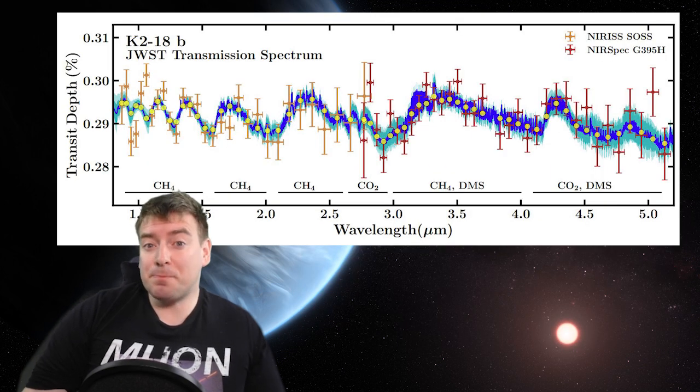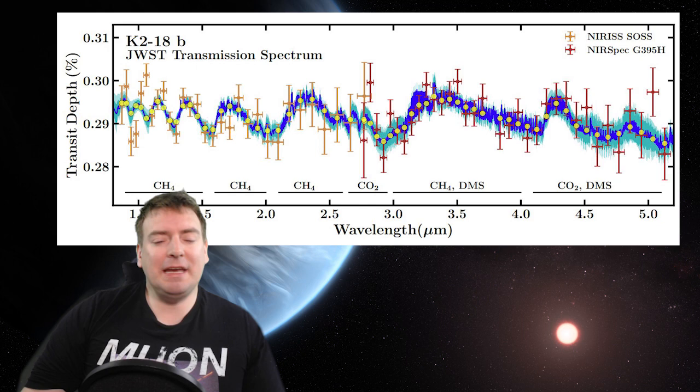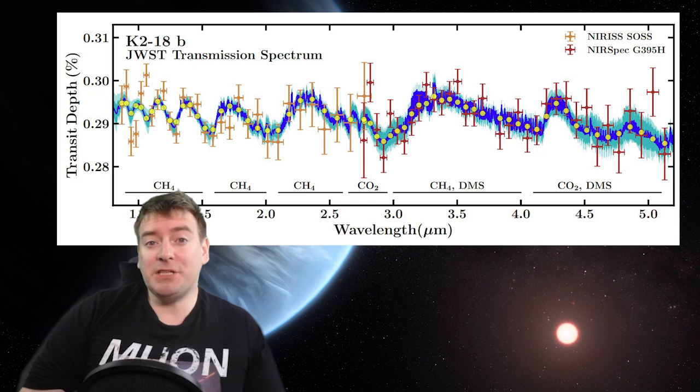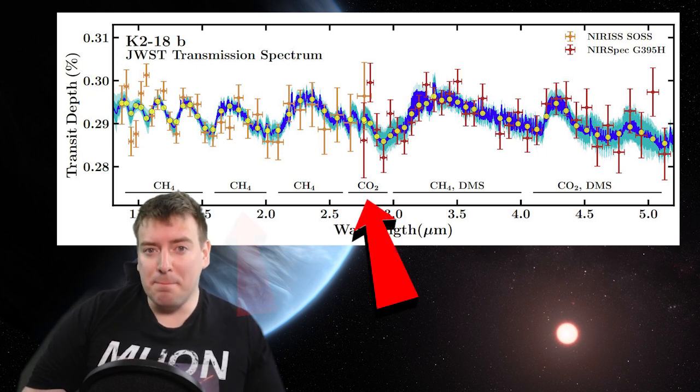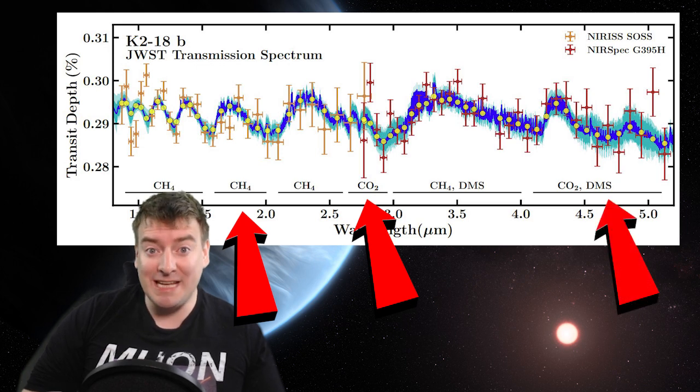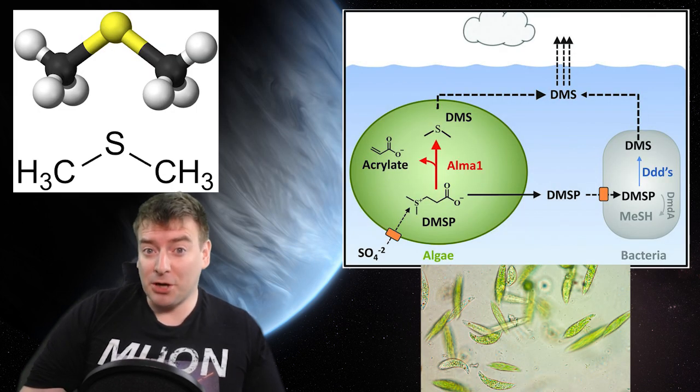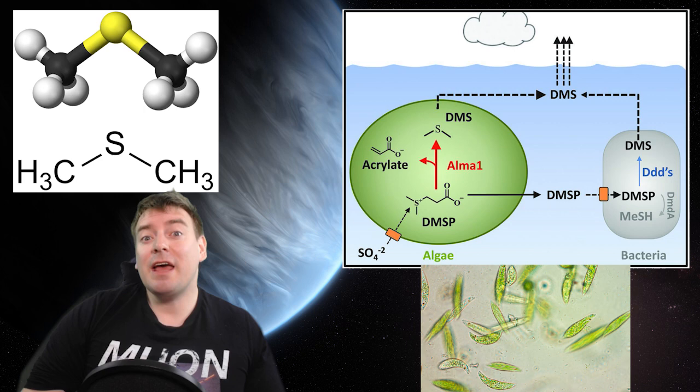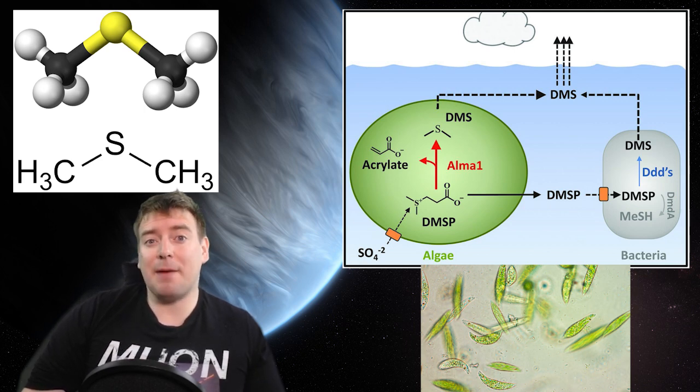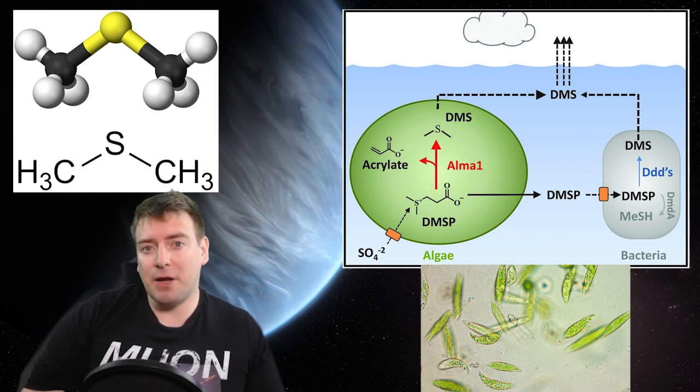The authors claim that spectra of K2-18b's atmosphere indicate the presence of molecules linked to life here on Earth, potential biosignatures. They point to the presence of carbon dioxide, methane and especially dimethyl sulfide or DMS. On Earth, the production of dimethyl sulfide is only associated with life. And the bulk of DMS in the Earth's atmosphere is produced by phytoplankton living in marine environments.